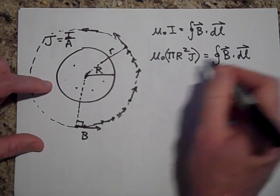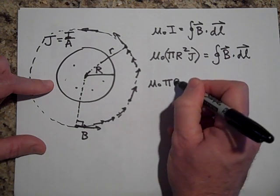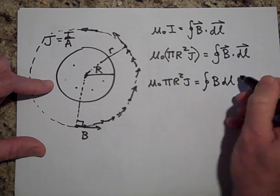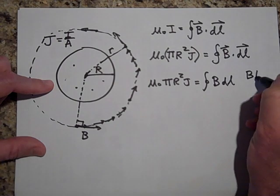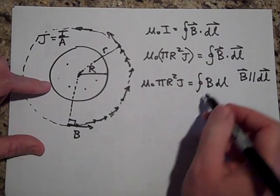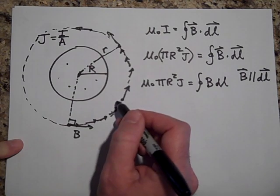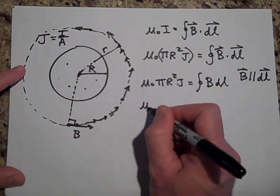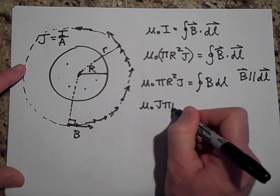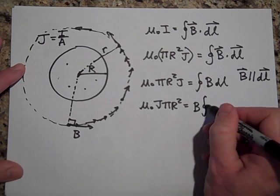Now we'll get rid of the dot product because B and DL are always in the same direction. So this is the argument. B and DL are in the same direction at all points on the Amperian Loop. And then I can pull the B out of the integral because why would B be stronger here than here than here because of the symmetry. So μ₀ times J times πR² is equal to B times the closed loop integral of DL.